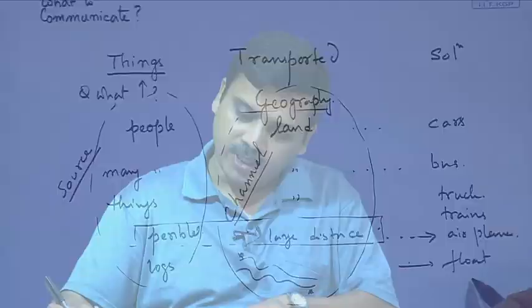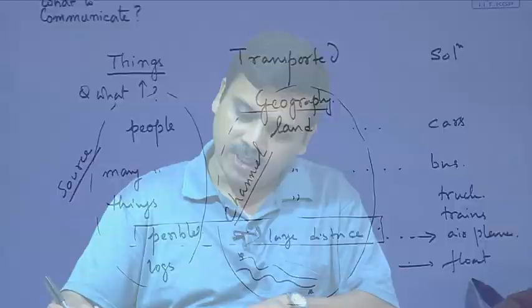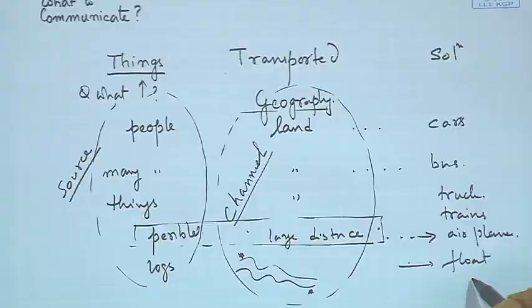What I am trying to hint at is that you need to understand what is to be sent, and you also need to understand over what things need to be sent. These are the two important things to understand before thinking of solutions. When you think of solutions, then comes the design of the system as a whole.